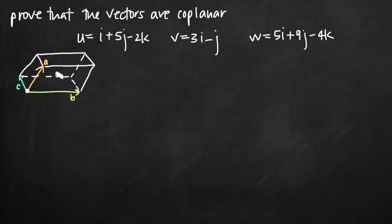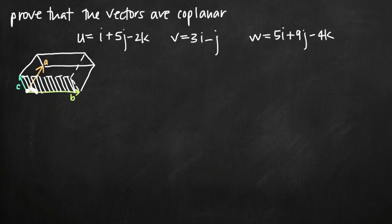If we calculate the volume and it is zero, then there is no height to the figure — the vector has no height component — and we're left with just a plane, which is the base of this figure. If we have no volume and only a plane, then we know that the vectors are coplanar and all three must lie in the same plane.